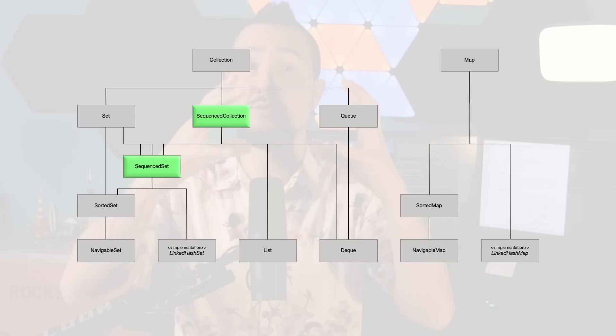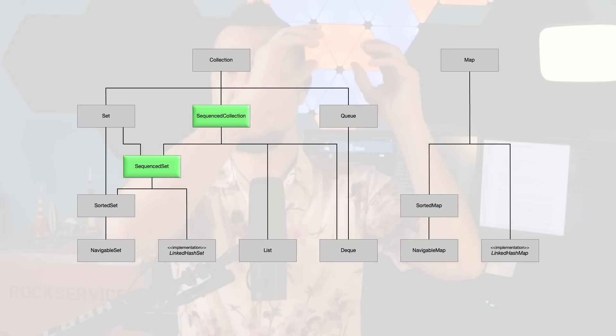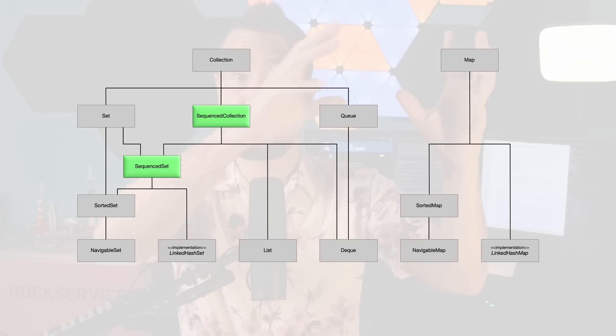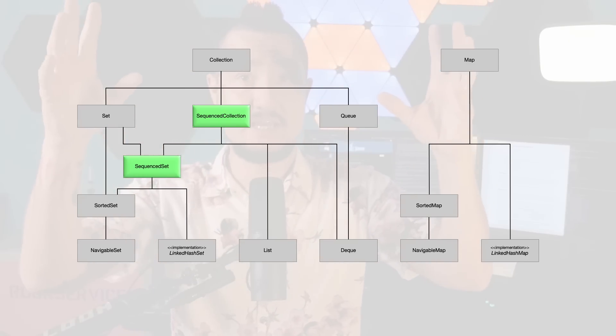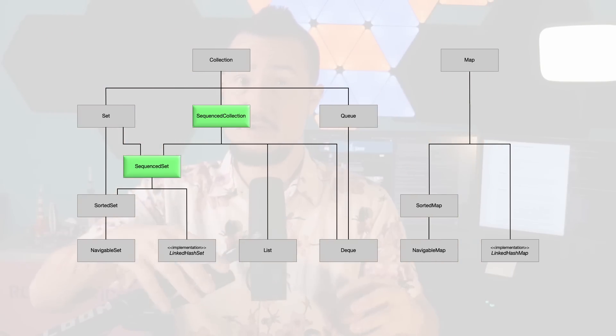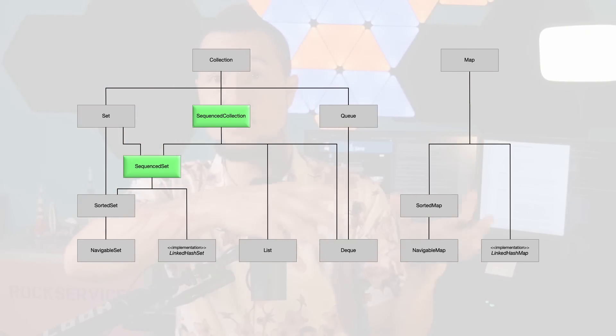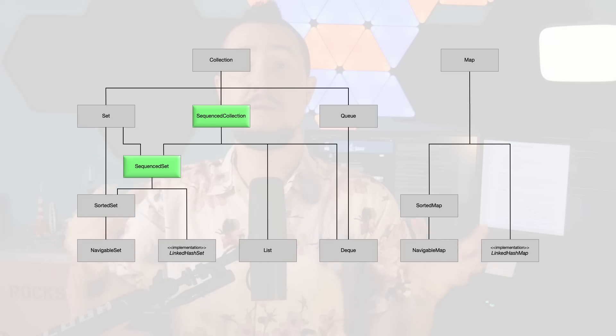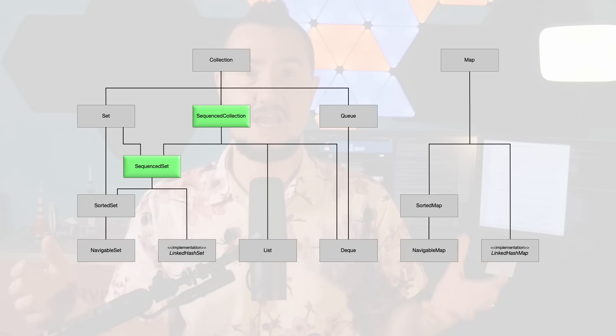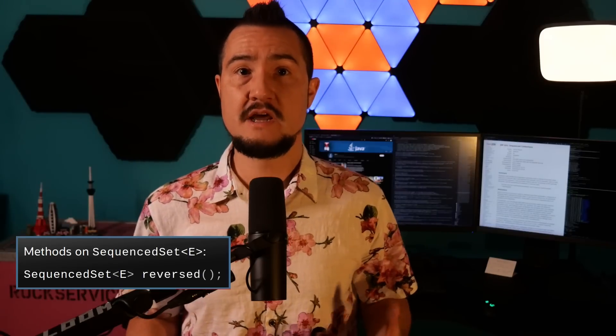Second: SequencedSet, which extends SequencedCollection and Set, and is further extended by SortedSet and implemented by LinkedHashSet. It offers no additional methods but defines a covariant override of reversed() that returns a SequencedSet.